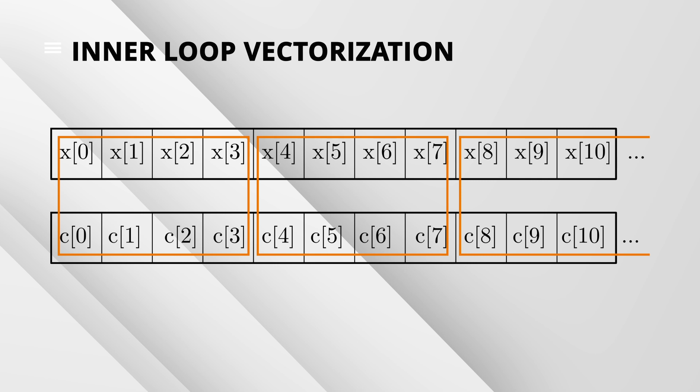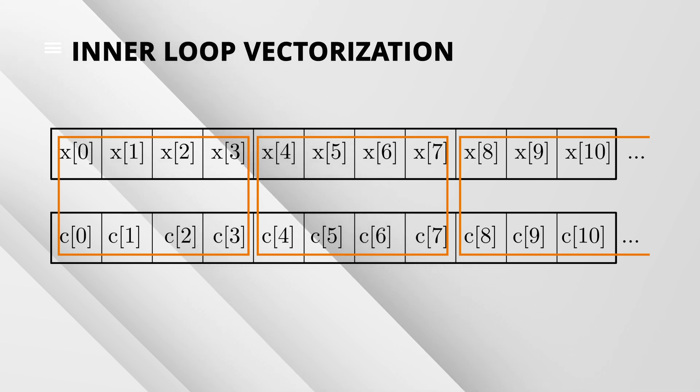You can see what happens when we use vectors of length 4 and we want to calculate the first output sample. Each orange frame represents an inner product between the so-called short vectors, which are simply parts of the full vectors. In one inner loop iteration, we compute 4 elements of the full inner product sum instead of 1. This is thanks to the fact that one orange frame can be executed with a single SIMD instruction. These are instructions that allow us to operate on more than one variable at a time — in essence, operate on vectors. In inner loop vectorization, we use SIMD to calculate the parts of the inner product sum, performing fewer processor operations than in the baseline FIR implementation.